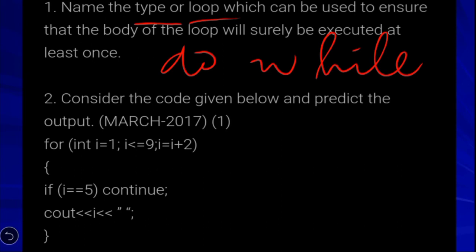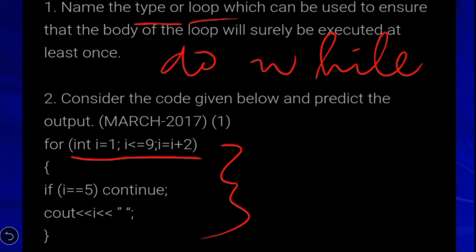Consider the code given below and predict the output. In this for loop, int i is equal to 1; the condition is i less than or equal to 9; and the update is i equal to i plus 2. So i starts at 1 and increments by 2 each iteration.